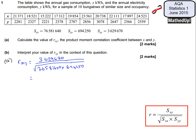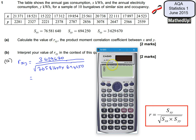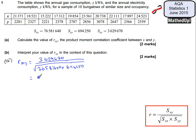And that's going to be equal to, if I grab my calculator, let's stick that in. So we've got 3629670 divided by the square root of 76581640 times by 694250, and that gives us 0.498 to three significant figures.